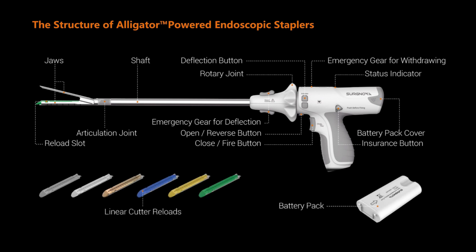The stapler cannot be disassembled except the battery pack cover. Its main functional parts include close fire button, open reverse button, deflection button, rotary joint, insurance button, and emergency gears.